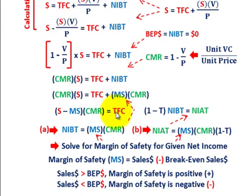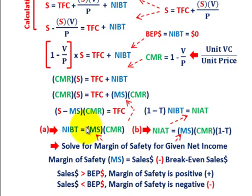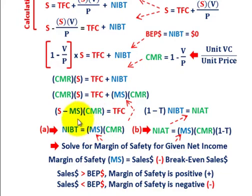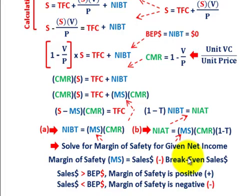So in summary, we've worked our way down into dollar terms to see how we can determine net income before taxes. Knowing our margin of safety and our contribution margin ratio, we can calculate net income before taxes simply as: MS times CMR. Margin of safety is just the difference between total sales and break-even sales, and knowing any of these variables, you can solve for the others.